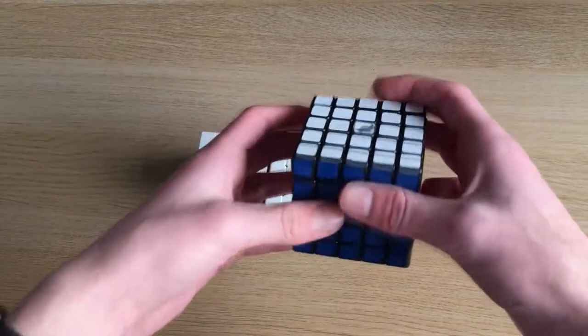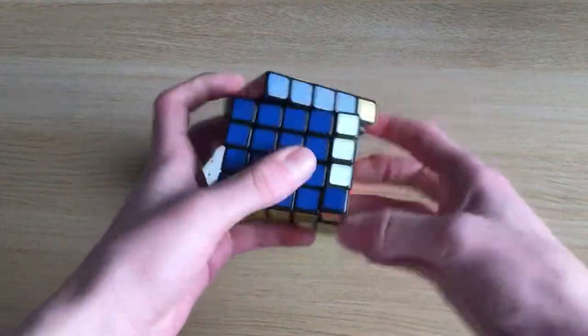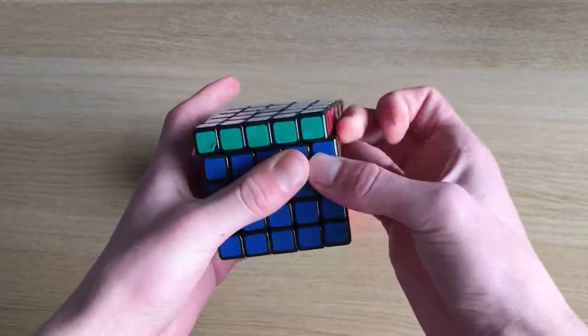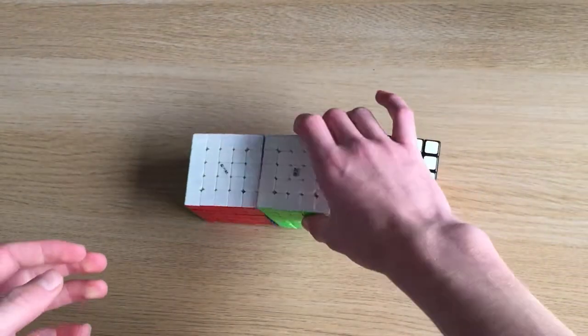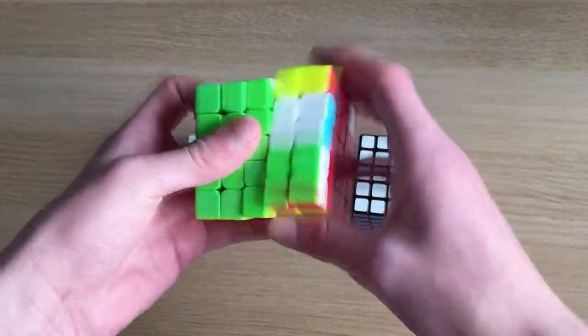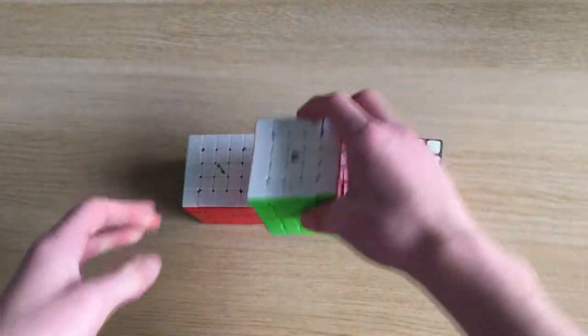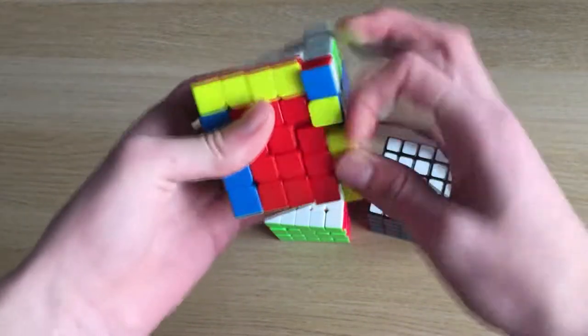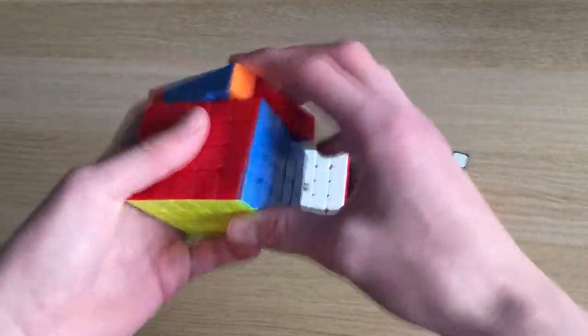I have three 5x5s. My first one was the CycloneBoys 5x5. It's not very good at all. Then we've got the QiYi Zhisheng, which is much better for the price. I used this as my main for quite a while. And the Valk 5 M, which is my current main, and is a really nice 5x5.